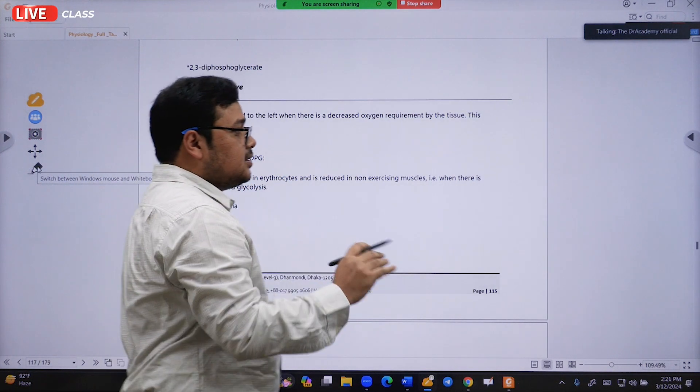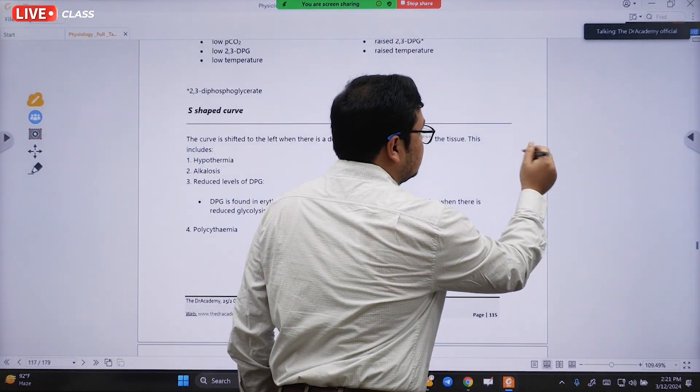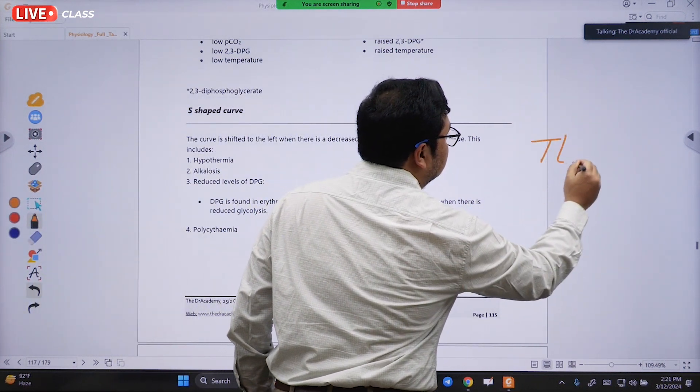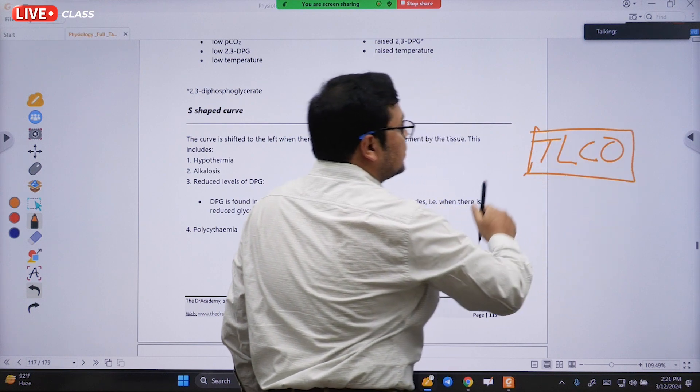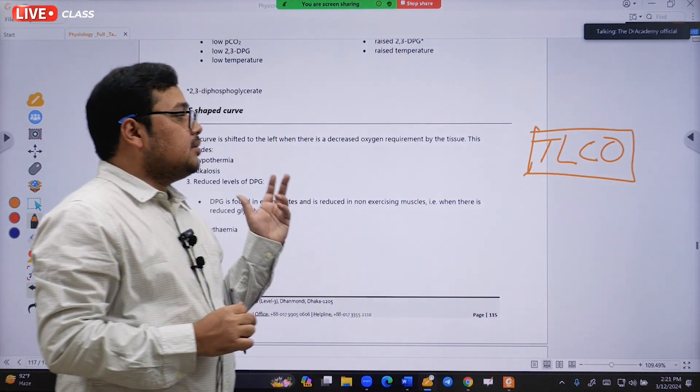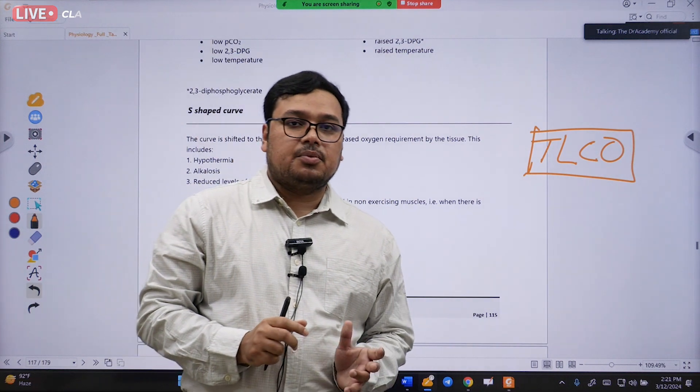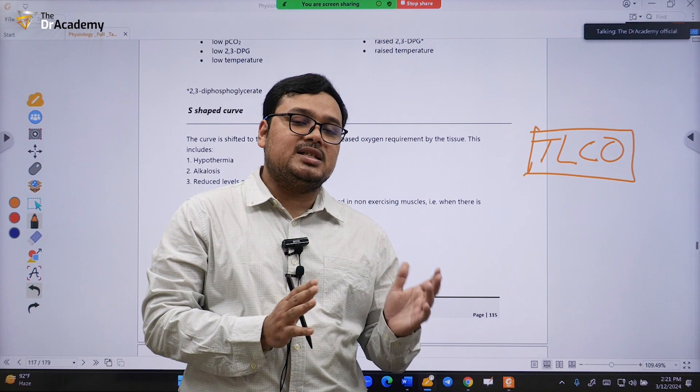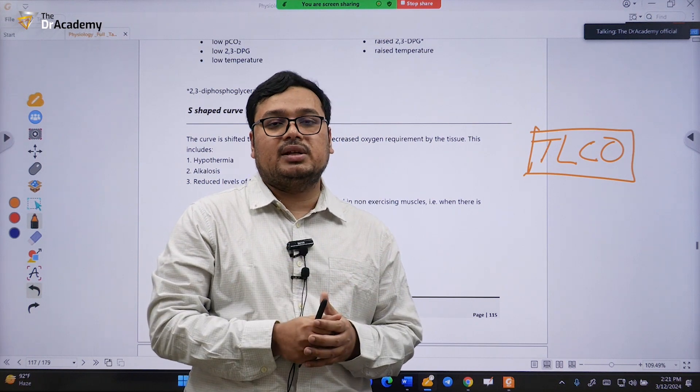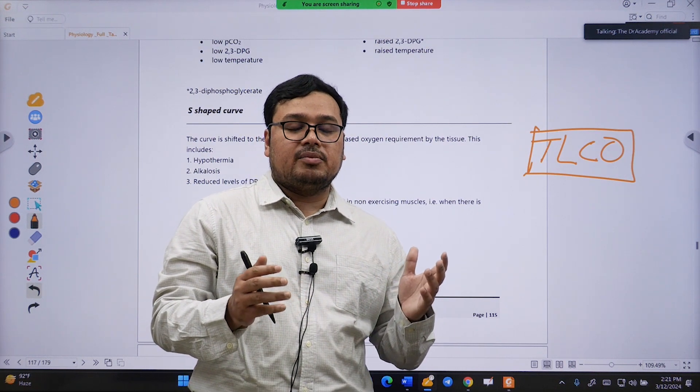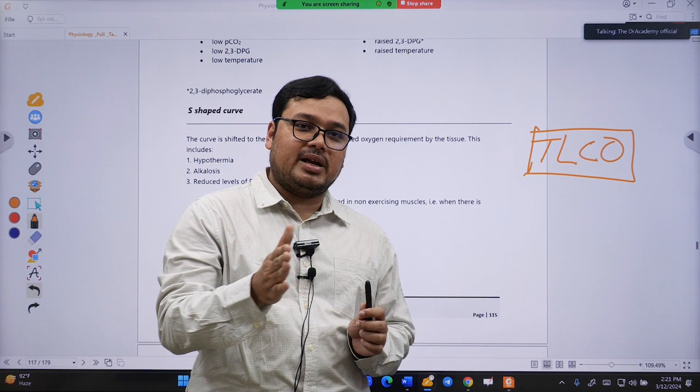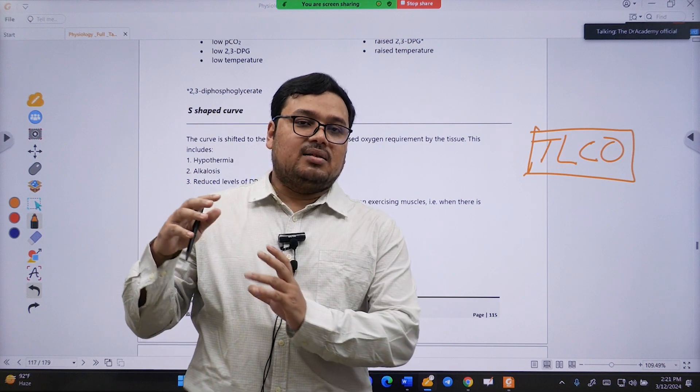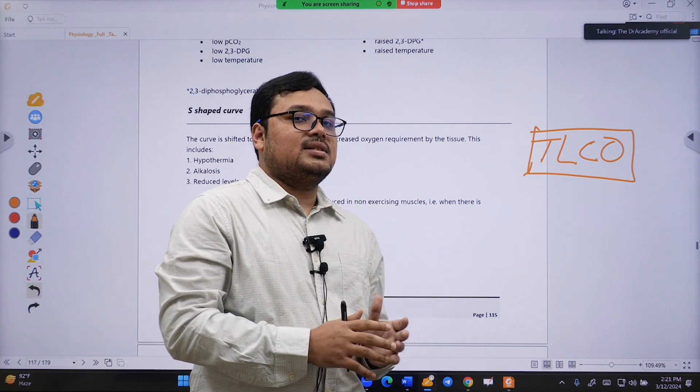Another interesting thing they'll give you is regarding TLCO. What is TLCO? In simple terms, it measures how carbon monoxide shifts through the basement membrane of the pulmonary endothelium. You need to know the layers of the pulmonary endothelium - the gas exchange occurs between the alveolus and the pulmonary vessels.